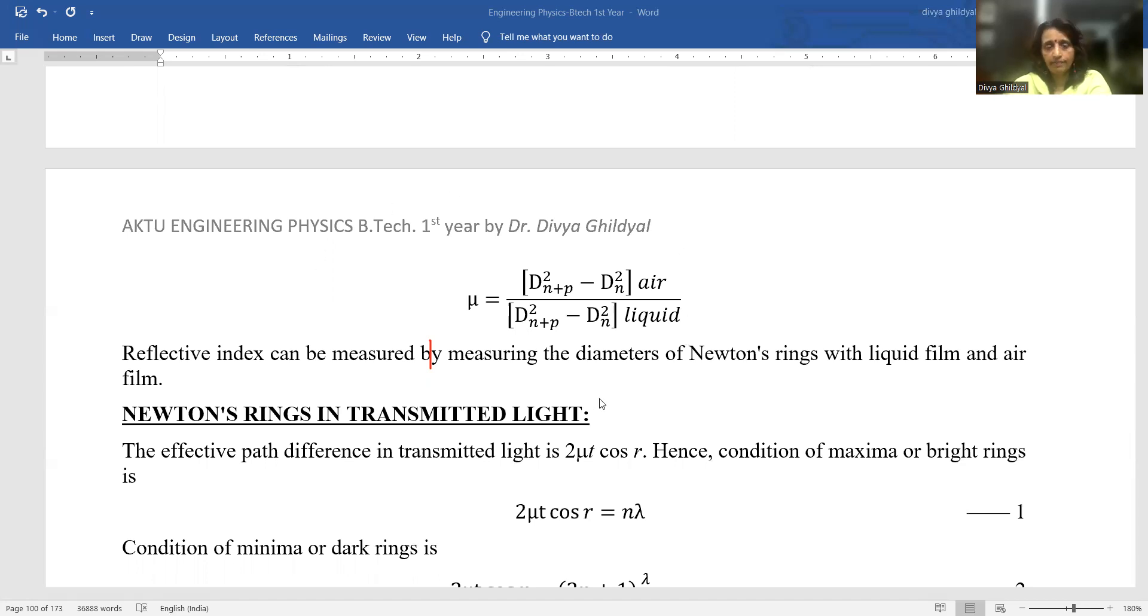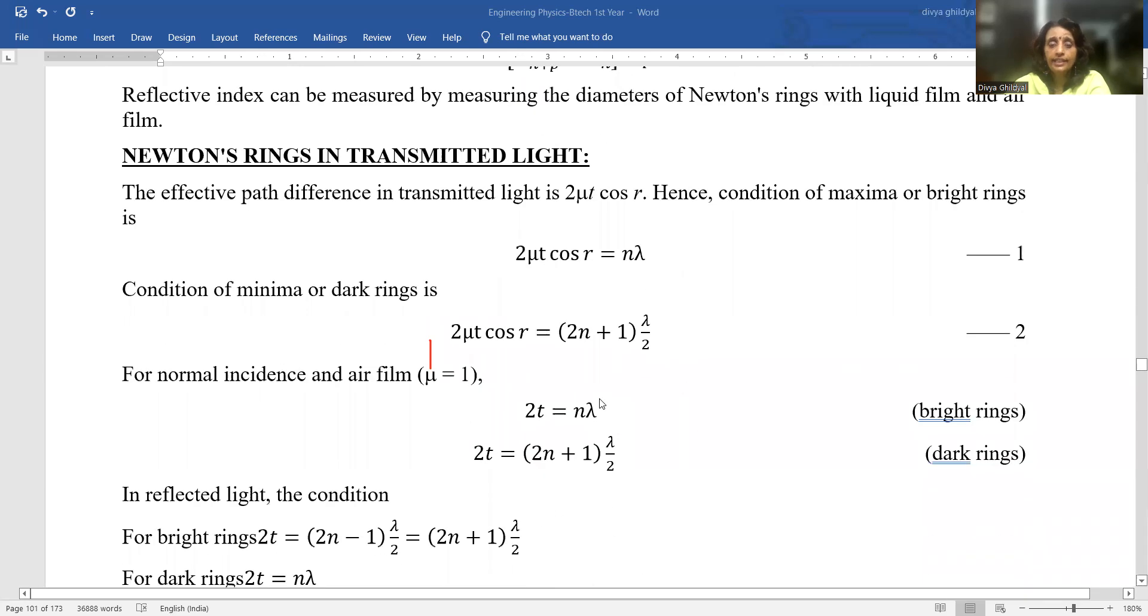Refractive index can also be measured with the help of Newton ring experiment. Wavelength of sodium light can be found with the help of Newton ring experiment. This was the case of reflected light.